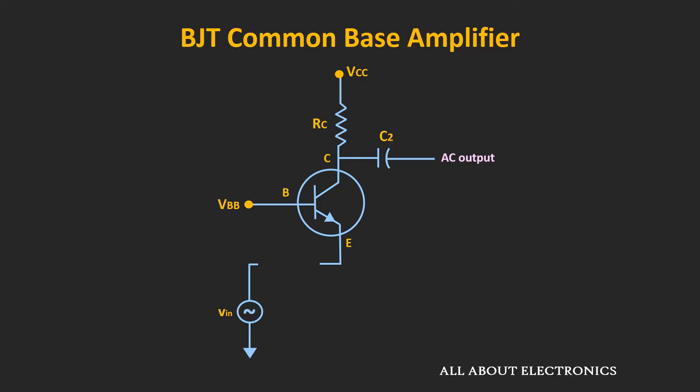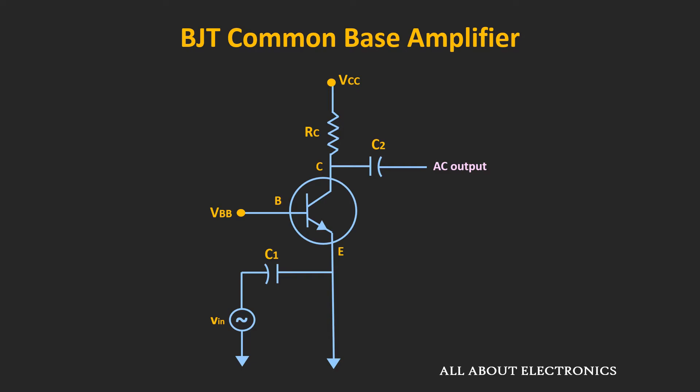That means there has to be some path for the biasing current. Let's provide the path for the biasing current and connect the input signal in this fashion, and see whether this circuit will work. Now in this circuit, although there is a path for the DC biasing current, for the AC signal this coupling capacitor will act as a short circuit, and because of that the input signal will also get grounded, and we will not get any output signal. So it shows that if you want to couple the input signal, there has to be some series resistor at the emitter terminal. This is the proper way to couple the input signal at the emitter terminal.